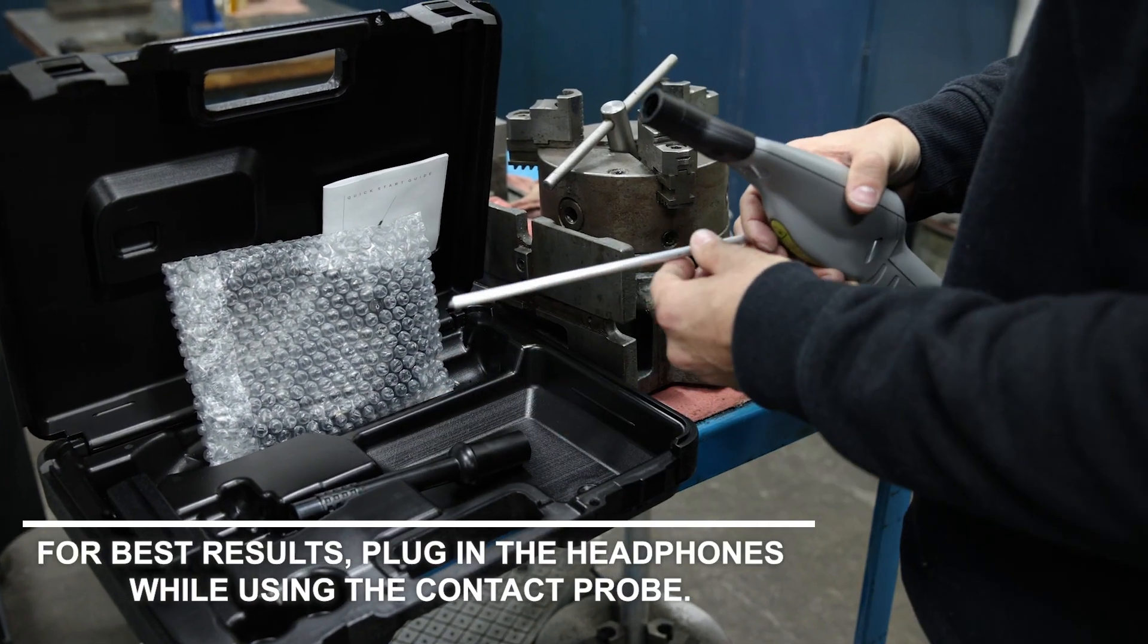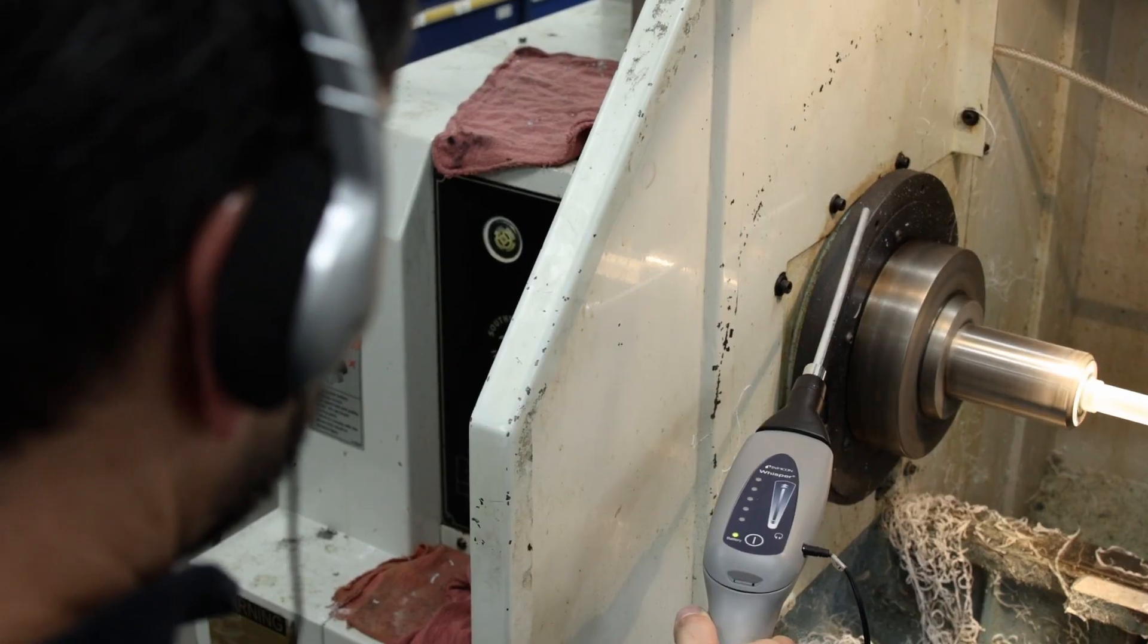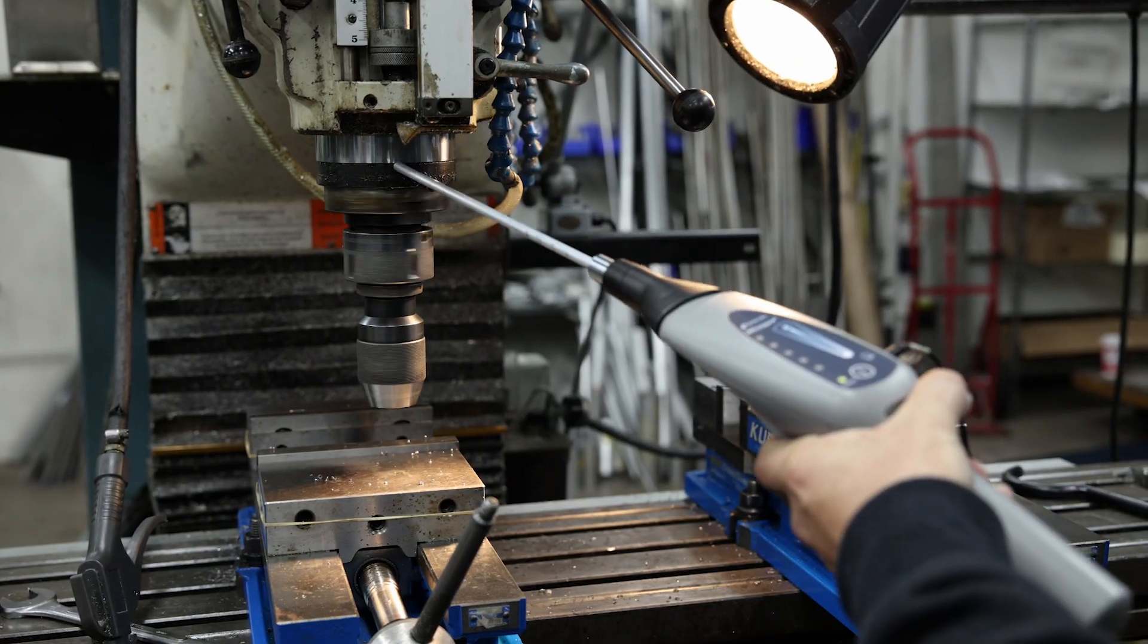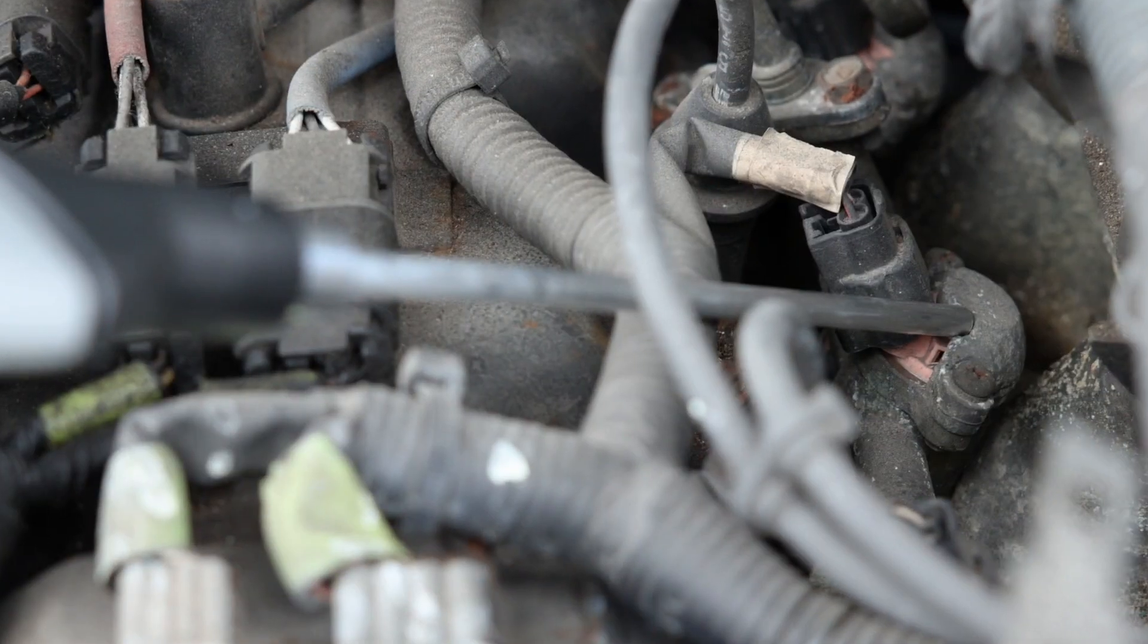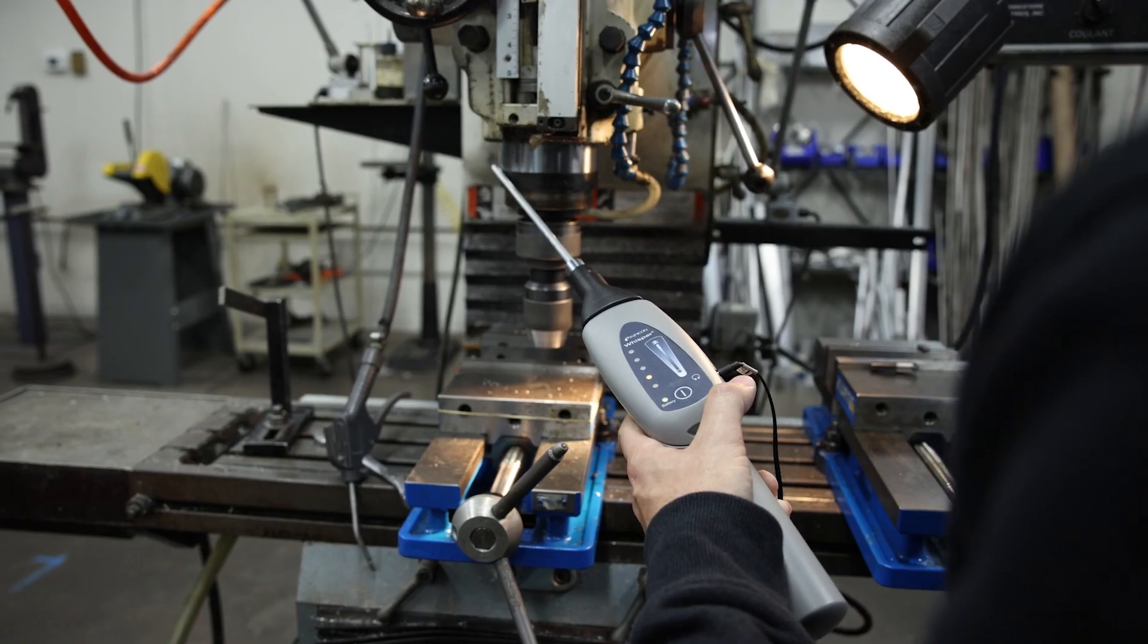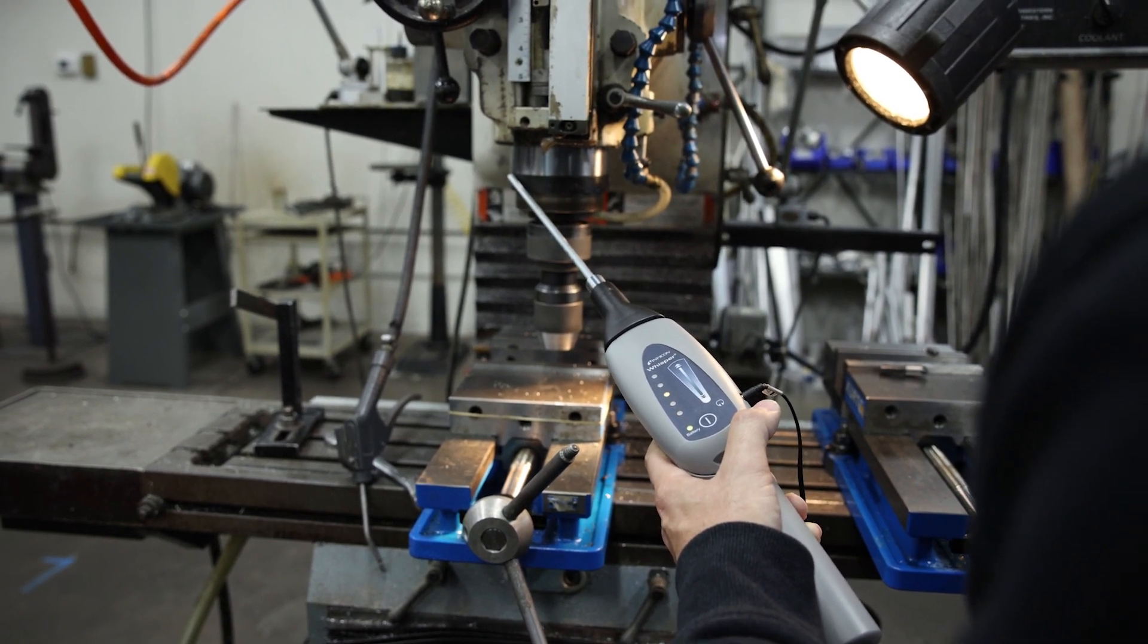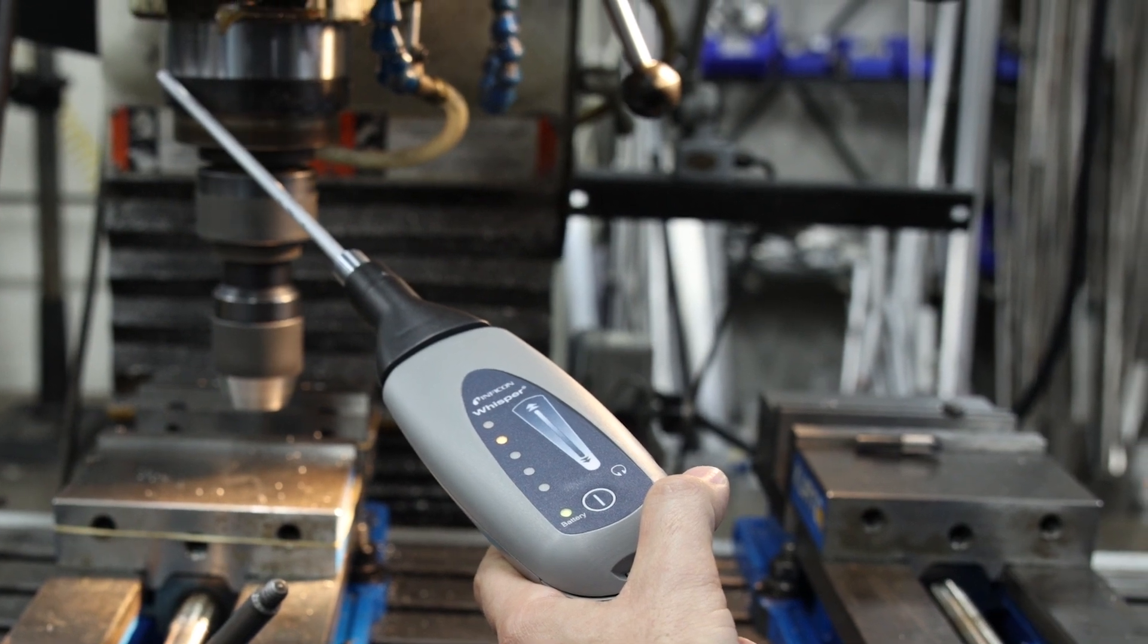Connect the contact probe to pinpoint worn or damaged mechanical components like gears, bearings, solenoids, or pistons. Properly functioning machinery sounds smooth and clear. Poorly functioning machinery may make irregular or grinding noises.